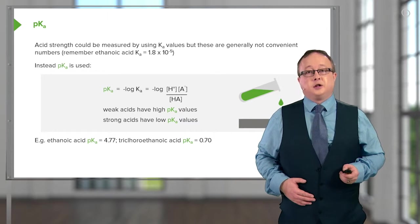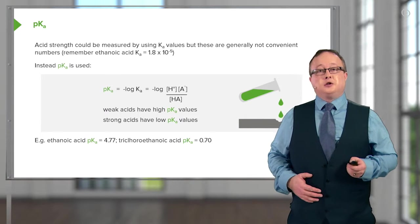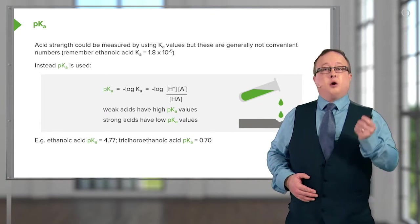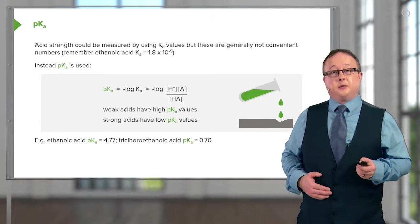By carrying out the negative log to the base 10, we get a value that's easier to deal with. Usually a value running from 1 through to 14, or at the very least, a decimal value which is easy to work with.